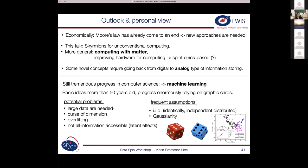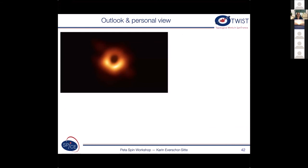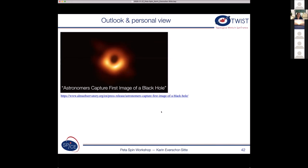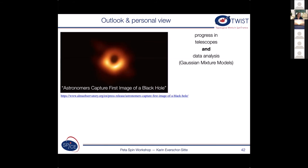So here's one example where not all of the information is accessible. So that's the first picture of the black hole. And to be honest, you don't see kind of the black hole. You see only the impact of the black hole in the data. So the latent effect the black hole has on the data. And in my personal view, this picture was possible. And it's a very expensive picture. But in short, this picture was possible because of progress in telescope and data analysis.